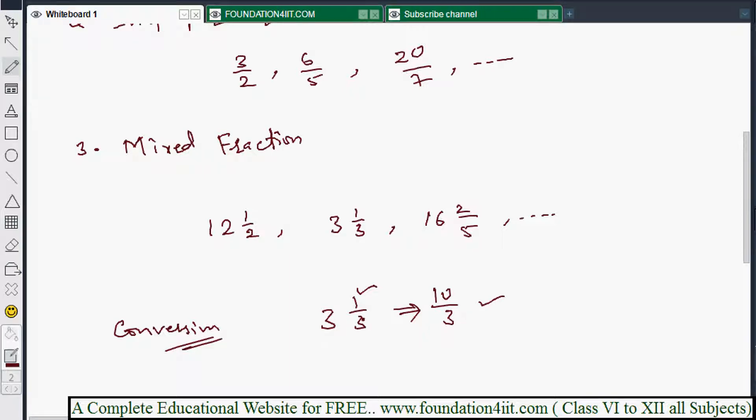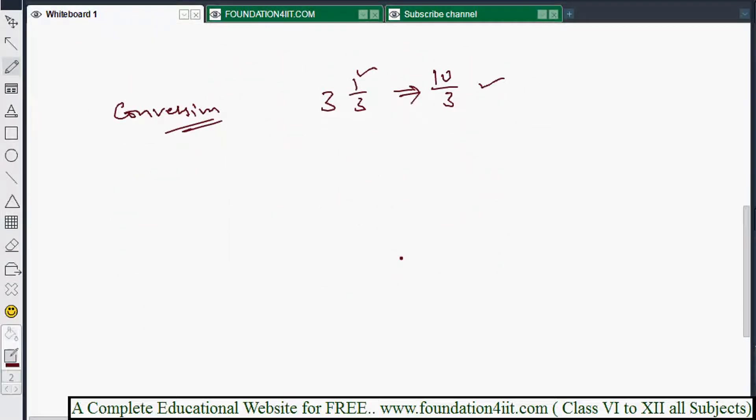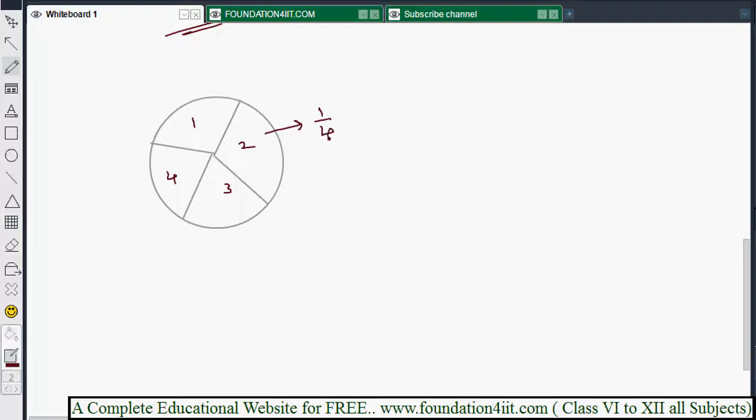Now generally, fraction is a part from whole. I'm taking one example with some pictures. If you take a circle, if you observe - I had taken four equal parts. This is first, second, third, fourth. So if this circle is divided into four parts, means every part is one by four because total parts are four.